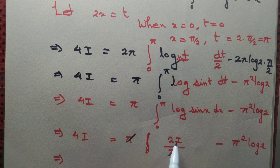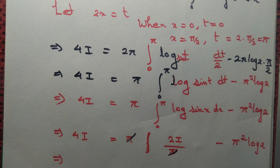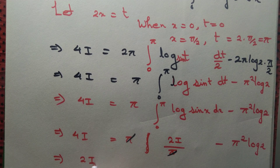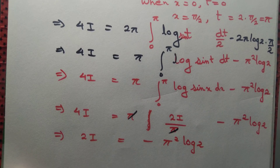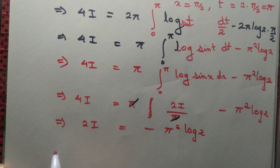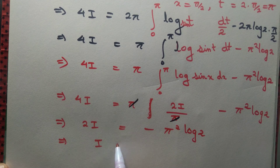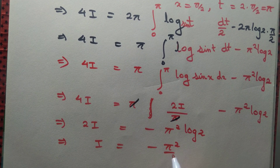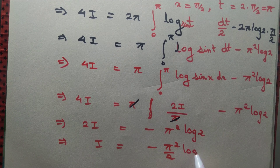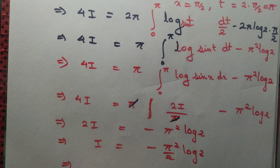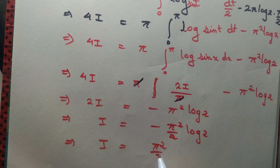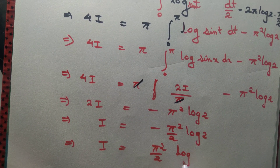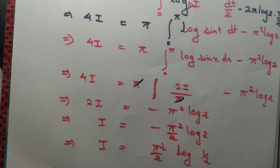Taking 2I to the left-hand side: 4I - 2I = 2I = -π²·log 2. So I = -π²/2·log 2, which can be written as π²/2·log(1/2). And we are done.